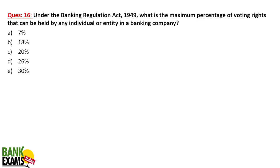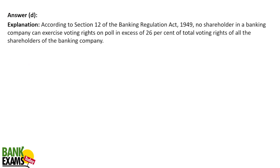Under the Banking Regulation Act 1949, what is the maximum percentage of voting rights that can be held by any individual or entity in a banking company? The maximum is 26%. As per the Banking Regulation Act, no individual or entity can hold more than 26% of voting rights in a banking company.